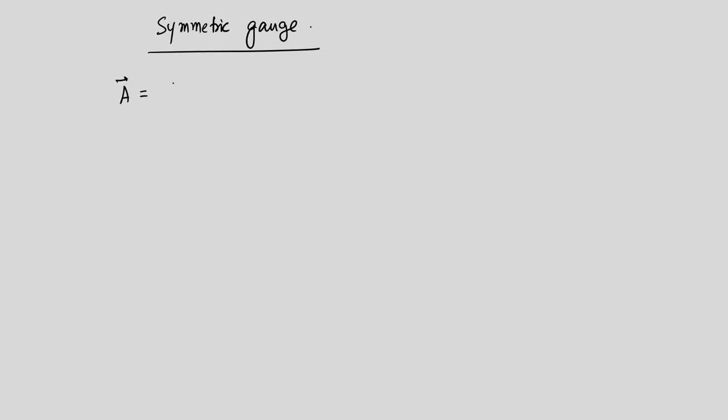We start discussing the symmetric gauge. For a constant magnetic field, the vector potential is given by A = (1/2) R × B. This has both x and y components, written as A = (y x̂ − x ŷ)/2, and it is a valid vector potential because taking the curl gives the magnetic field in the z direction.